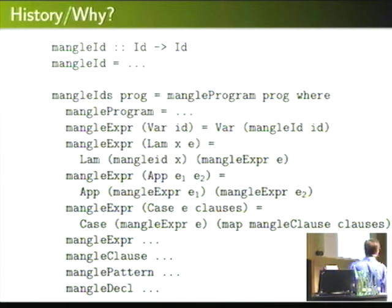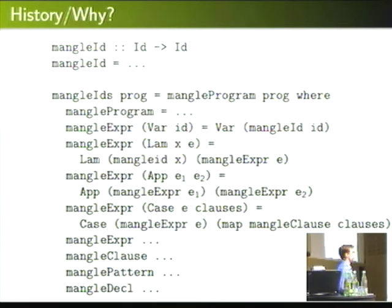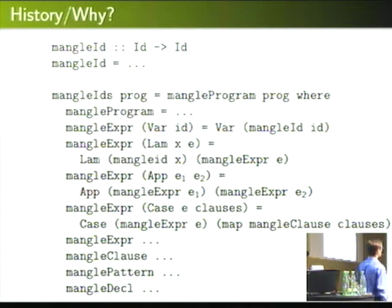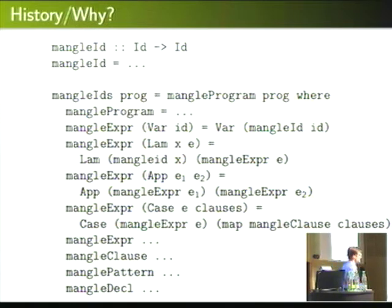Mangling a single identifier — that's meaningful work. But to mangle all the identifiers in a program, I have to do all of this other traversal. When I get to a variable, I call the mangle ID function. But when I do an application, I'm not doing any meaningful work; I'm just recurring down further and further. And this is not only for expressions — I have to hit most of the data types in my program, including case clauses, patterns, and declarations.